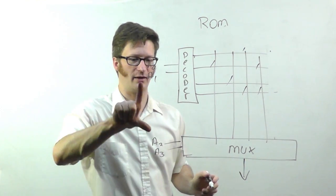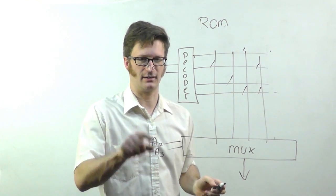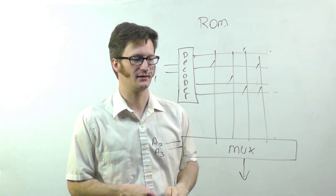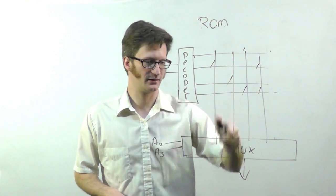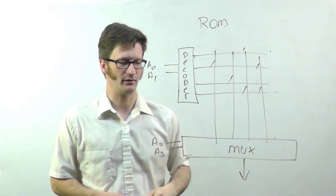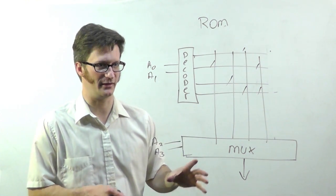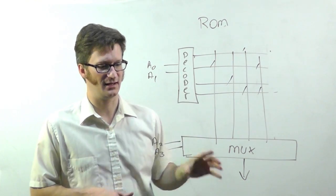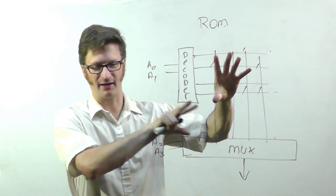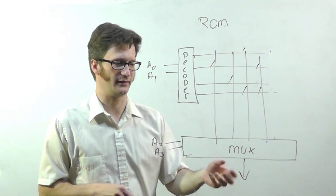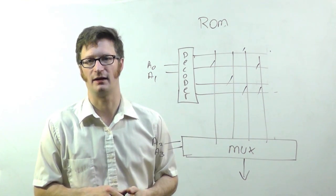So, here we have four address bits, which allows us to select one of 16 connections over here. And, we get our bit out. And, if we wanted to have a multi-bit one, well, then we just run the addresses into an exactly identical one, except for the connections are different, to give us data for another output.